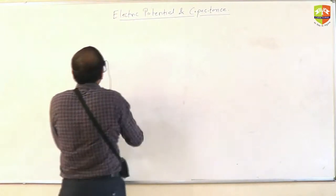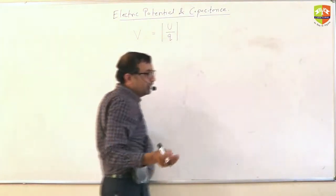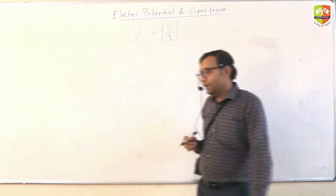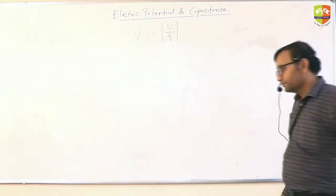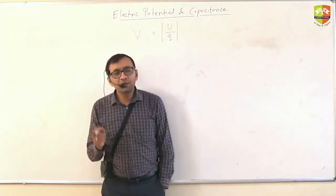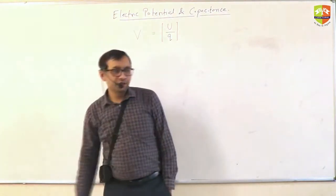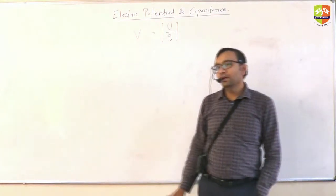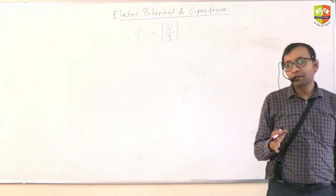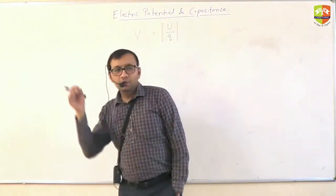Potential is represented by capital V, which equals potential energy divided by charge. If someone asks you the definition of potential: potential is the work done per unit charge, or potential is the work done to move one unit of charge from infinity to the point where you are finding the potential.